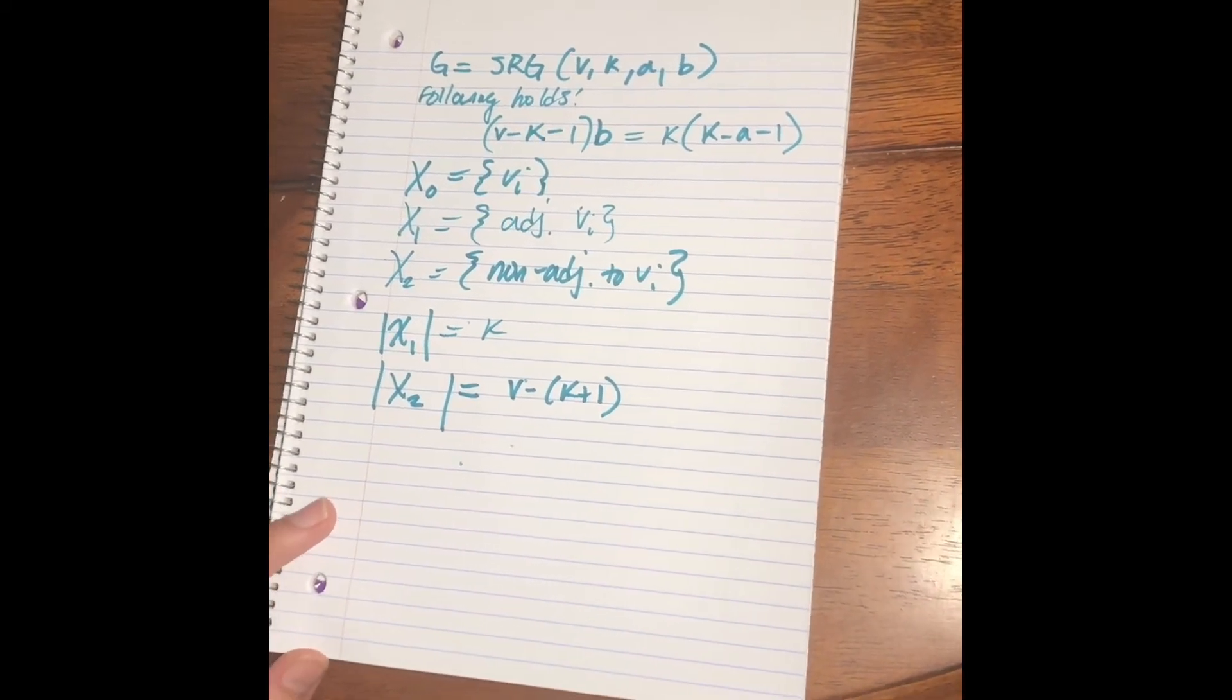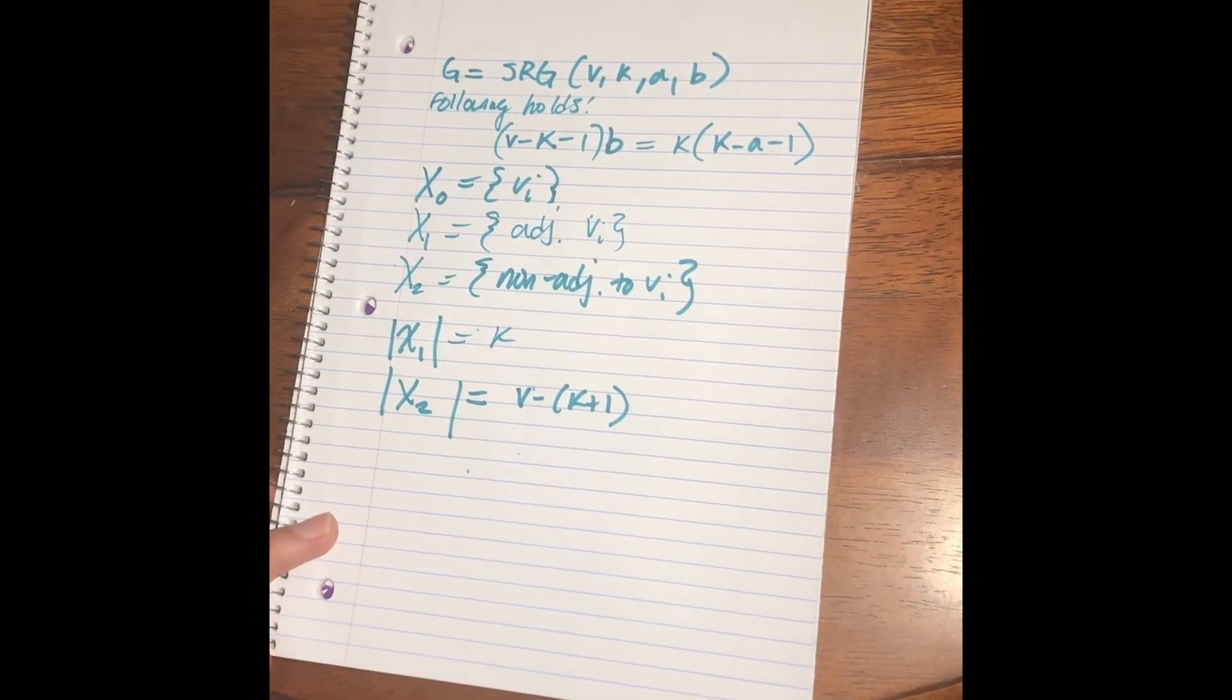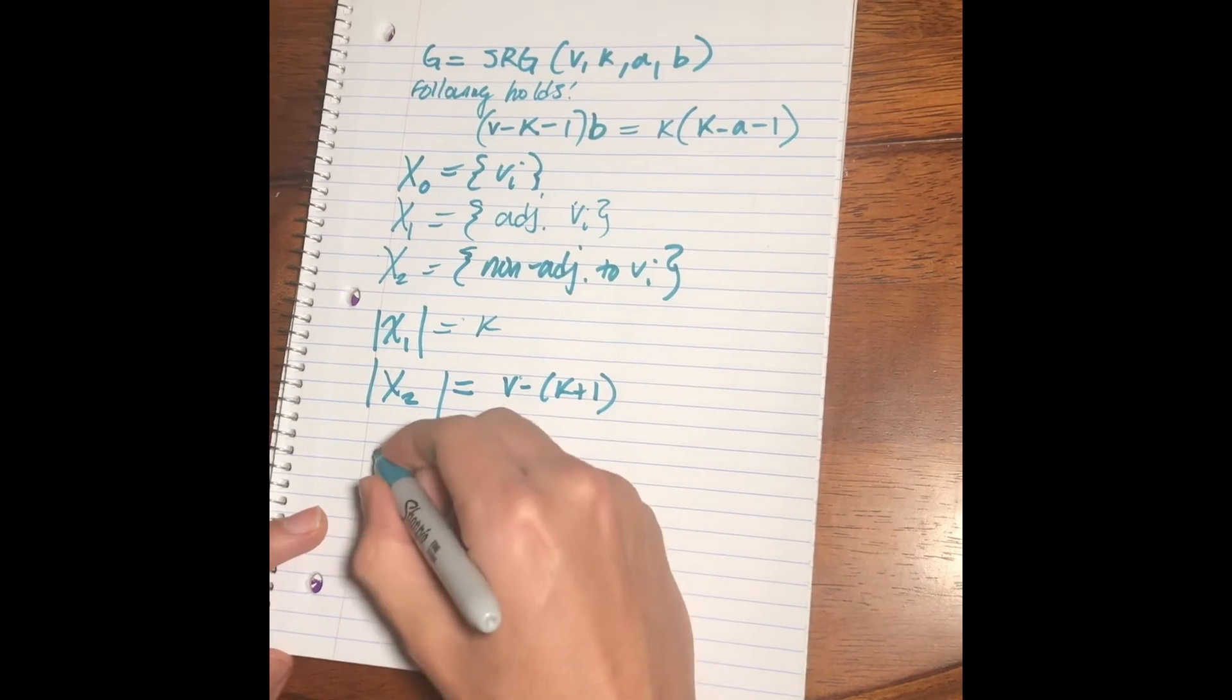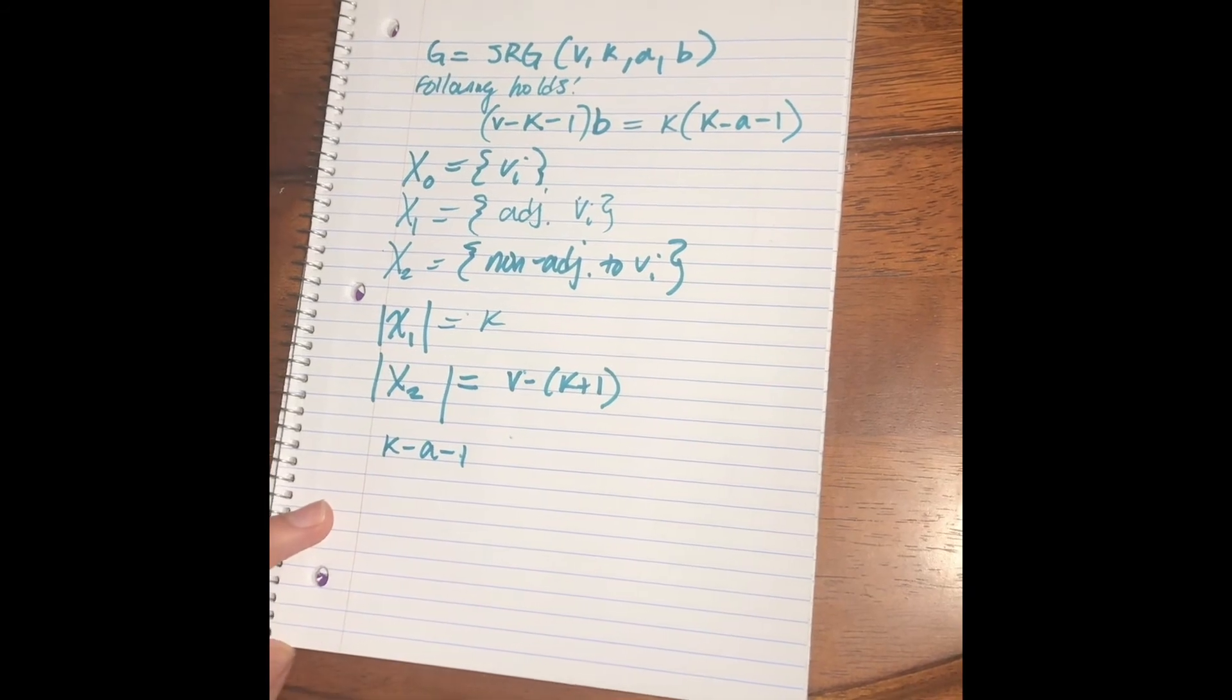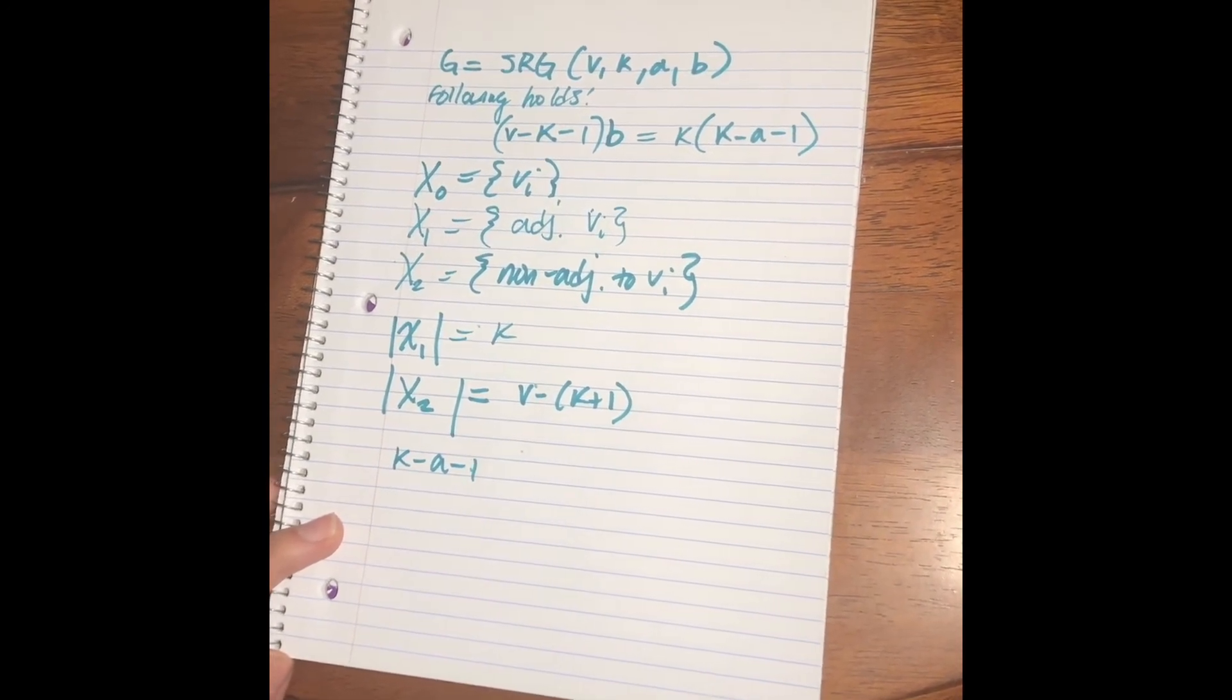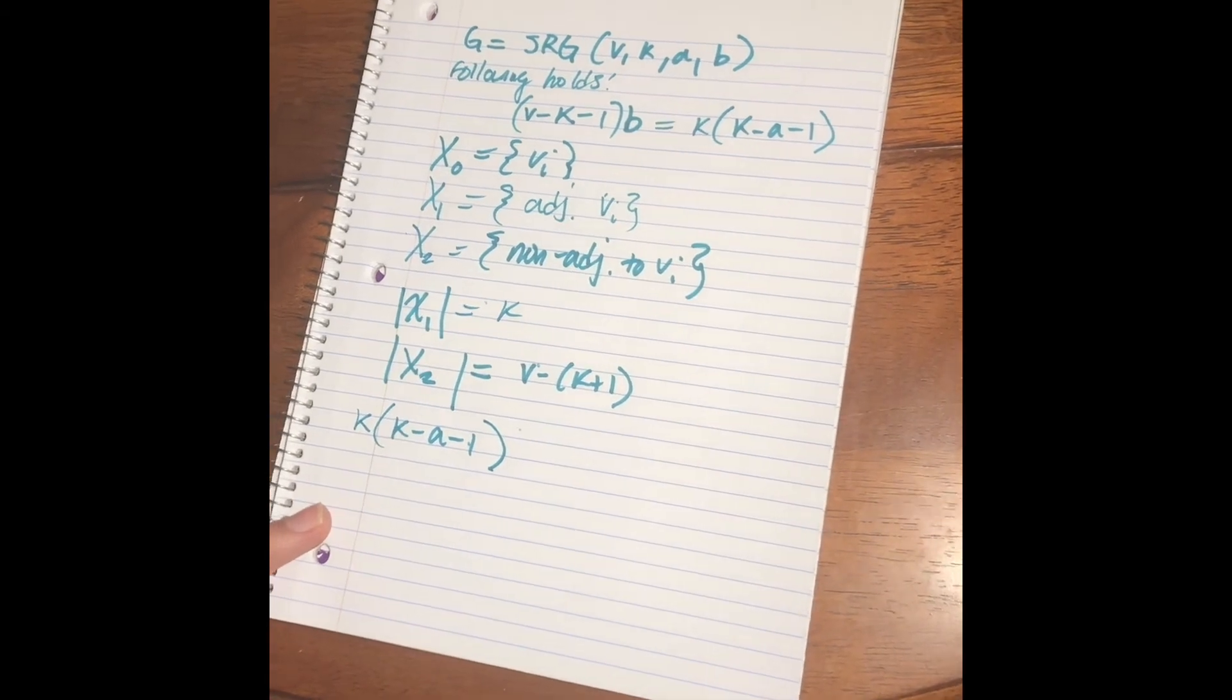Now, we simply have to count the number of edges between x1 and x2. So, every vertex in x1 has a common neighbors with vi that are also in x1. Thus, since g is k regular, there are k minus a minus 1 edges running between any vertex in x1 and vertices of x2. And since there are k vertices in x1, we see that this is, in fact, the number of edges running between x1 and x2.